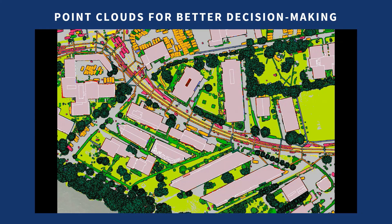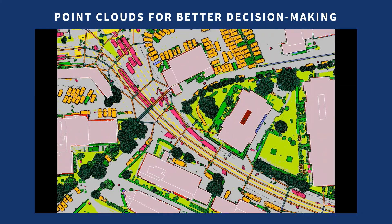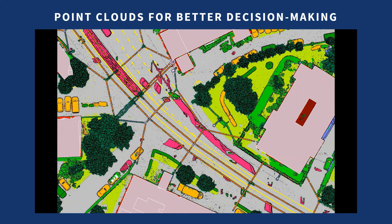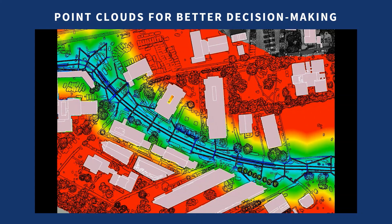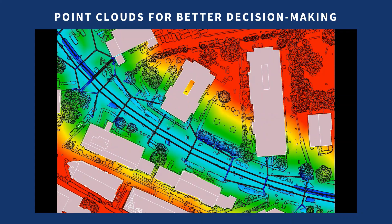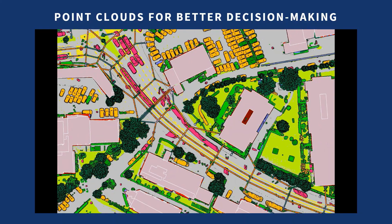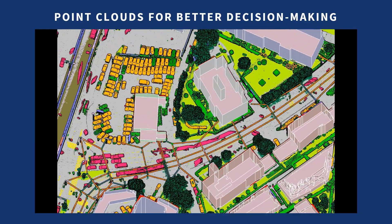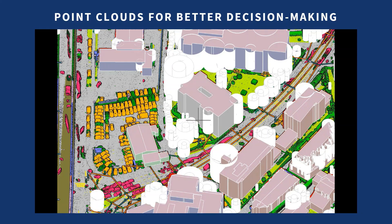When buildings are classified, the software can automatically vectorize and create 3D models. Detected trees and tram lines can be used as input in later analysis. Essentially, a raw point cloud must be classified in order to be used as a representation of the real world and for further modeling.